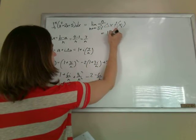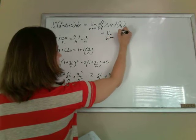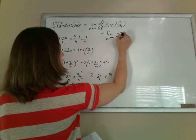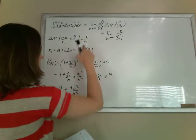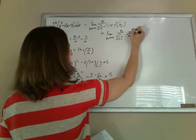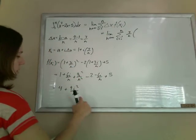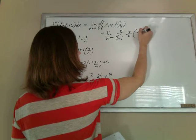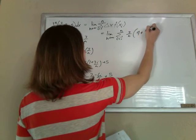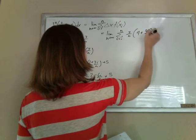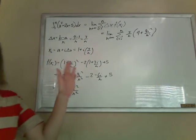So this is going to be limit as n goes to infinity, sigma i equals 1 to n, delta x we said was 3 over n, and f of x of i we said was 4 plus 9i squared over n squared. First phase done, setup done.